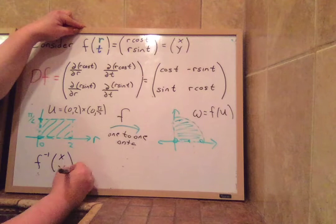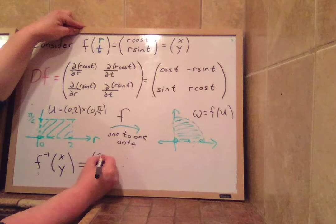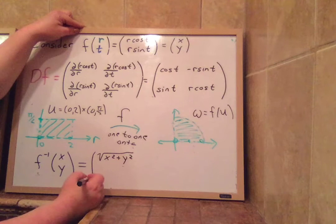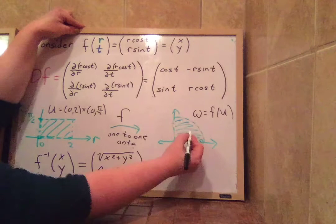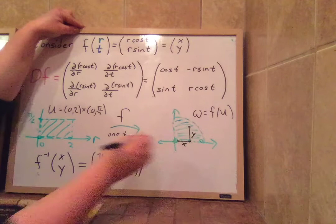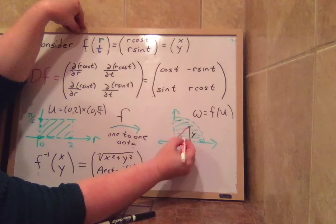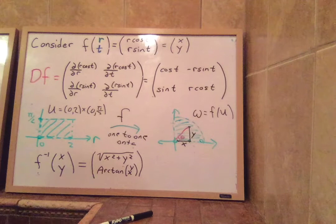f inverse is going to take x, y back to r and theta. But r is radius. And so the radius for x, y will be square root of x squared plus y squared. And the theta, well, that can be found by using arctan y over x. Because if I take a point here, y, x, and we want to figure out the theta. Then yes, tangent theta is y over x. So theta's arctan of y over x. All right, so that's f inverse.